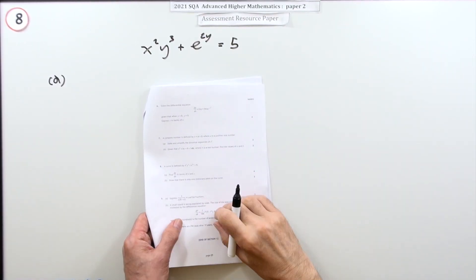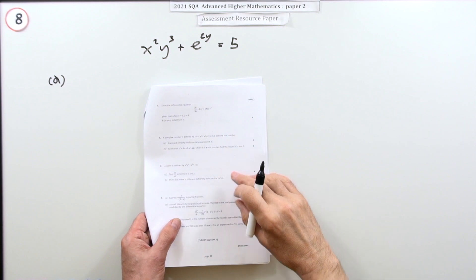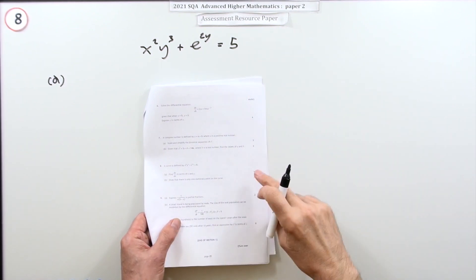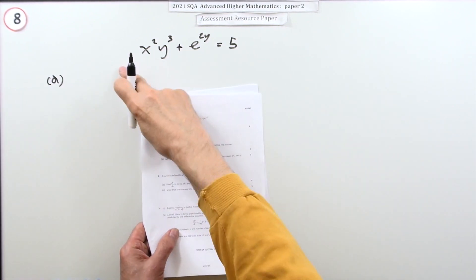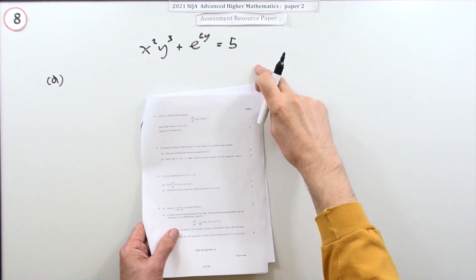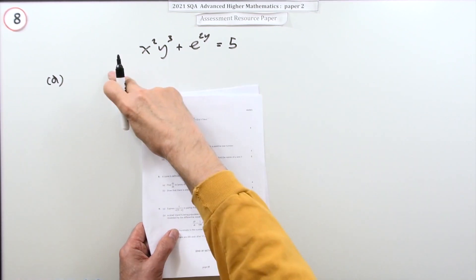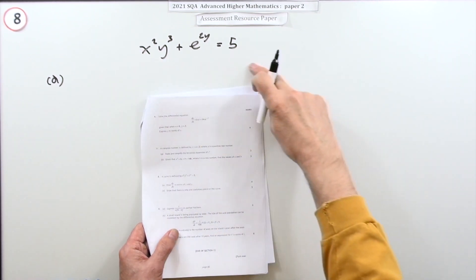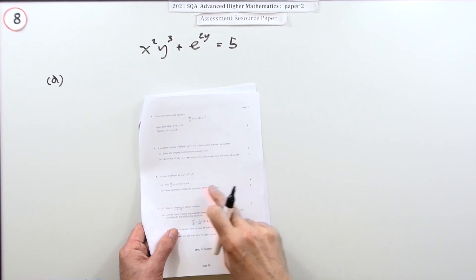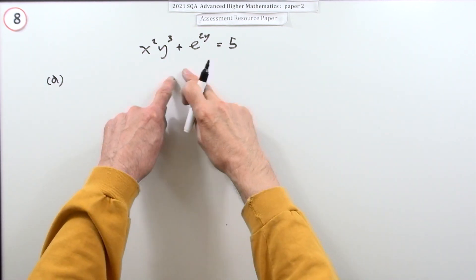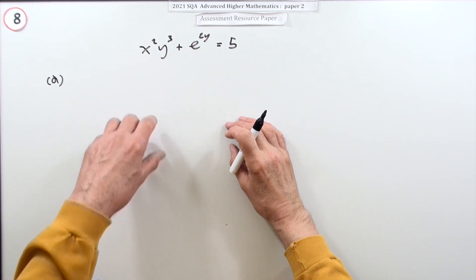Number eight from paper two of the 2021 Advanced Higher Mathematics paper, a seven-mark question. For part a, a curve is defined by this equation in implicit form: x²y³ + e^(2y) = 5. For four marks, find dy/dx in terms of x and y. Well, it's not quite implicit because I could rearrange it.